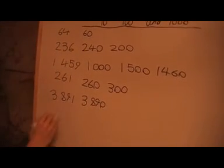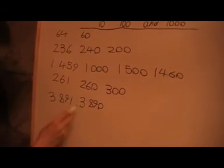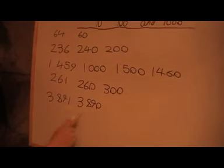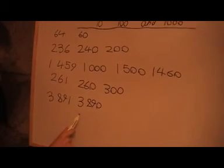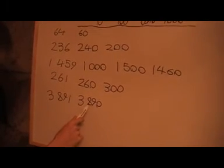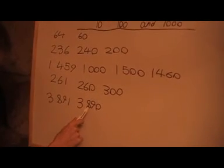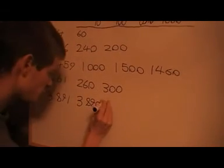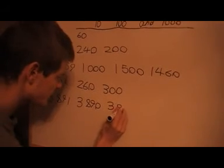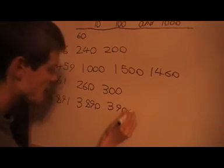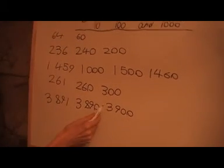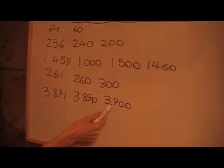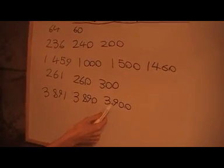Next, rounding to the nearest ten gives 3890 because the units digit is one. Rounding to the nearest hundred, look at the tens column — that's a nine, so round it up to 3900.